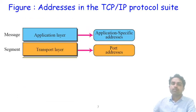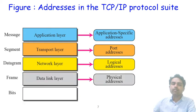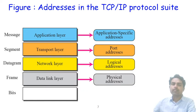To summarize: the data link and physical layers relate to physical addresses, the network layer relates to logical addresses, and the transport layer relates to port addresses, and the application layer relates to specific addresses. When data is generated at the application layer, it becomes a segment at the transport layer, a datagram at the network layer, a frame at the data link layer, and finally bytes sent from sender to receiver. This is how addressing works in the TCP/IP protocol.